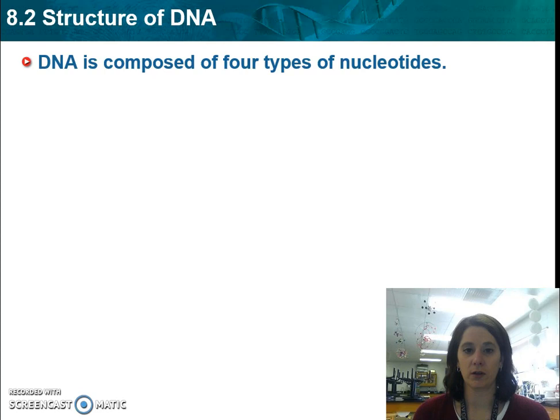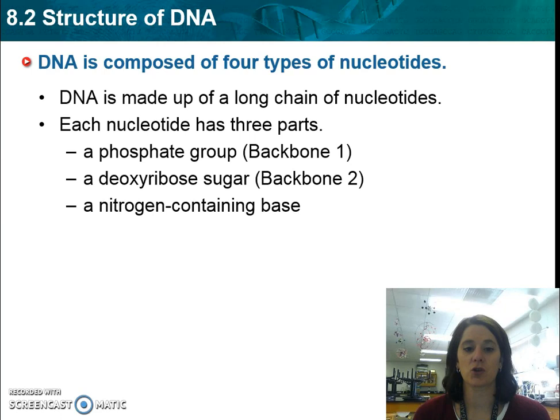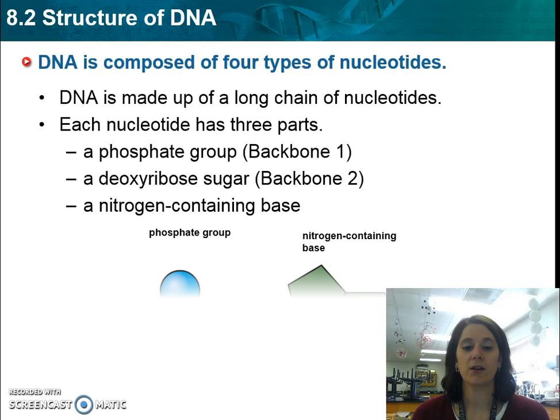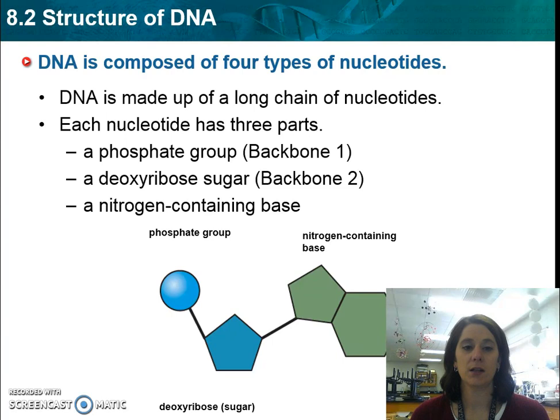DNA is composed of four particular nucleotides. Each nucleotide has three basic parts: a sugar group, a phosphate group, which are found on the sides of the ladder, and a nitrogen-containing base, which is what connects the steps to the ladder.